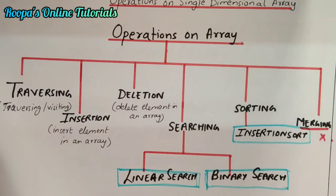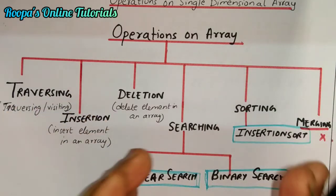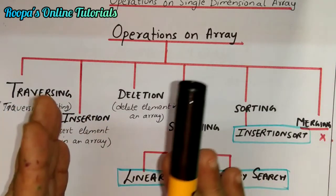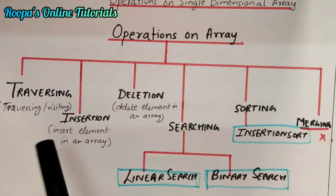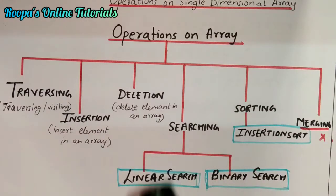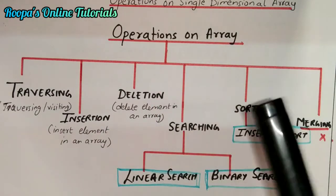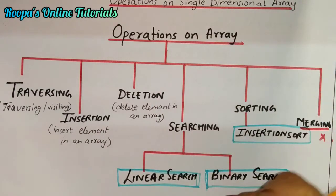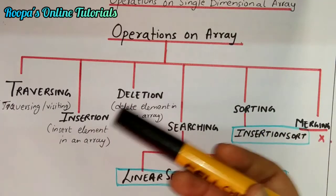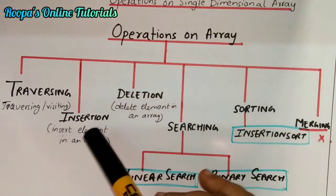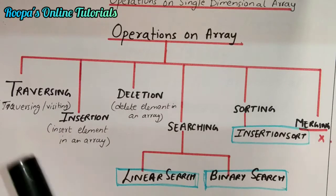Related to data structures, it will become much easier. Mainly we will be looking at single-dimensional arrays. For two-dimensional arrays, you will only learn the row major and column major order and the memory representation of two-dimensional arrays.